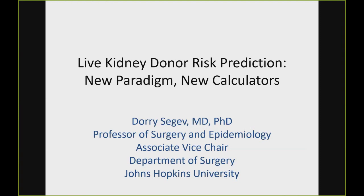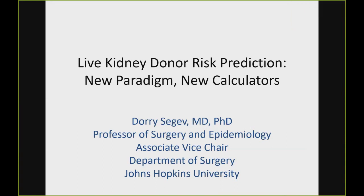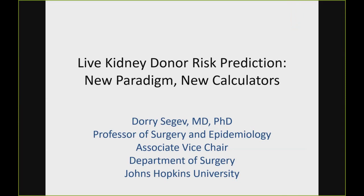We also need a non-self-reported data source and national representation. Instead of just looking at donors at one center, we turned to big data. I'll tell you about several publications — two in JAMA and one in the New England Journal — where we used big data to answer this question. In the United States, we have a registry of every single live donor who's donated since 1988 — today about 130,000 live donors. But the registry does not follow donors after donation, so we linked it to two other data sources.